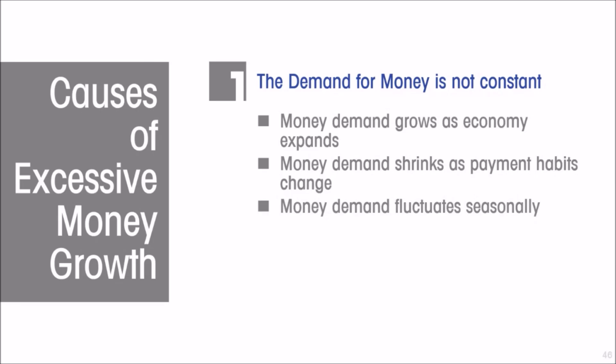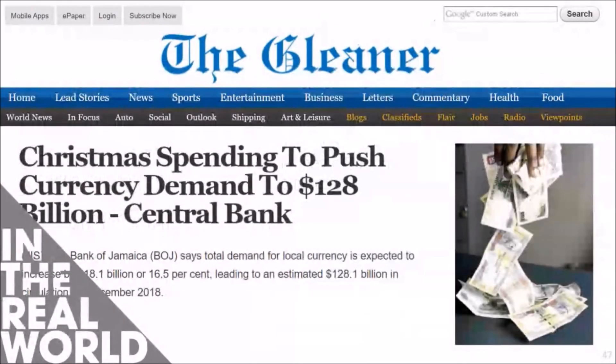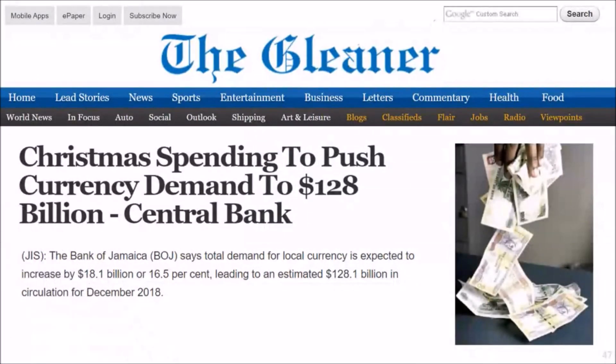On top of all of that, the demand for money fluctuates seasonally. The demand for money goes up in the summers and it goes up a lot at Christmas. So that has to be taken into account. In trying to identify what the appropriate money supply will be in the near future, it is not an exact deterministic mechanical process. We see examples of this all the time — Christmas spending can push currency demand to $128 billion, as the central bank notes.